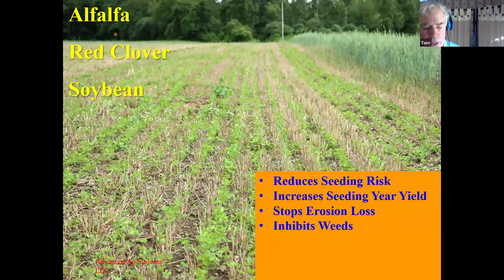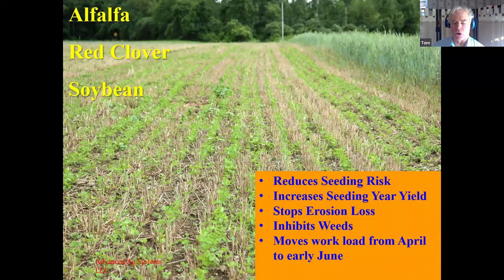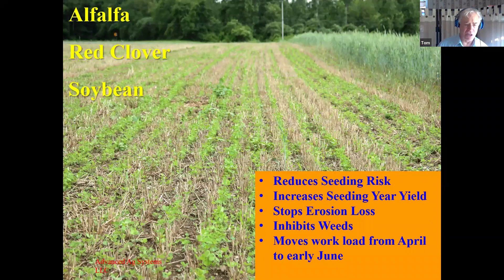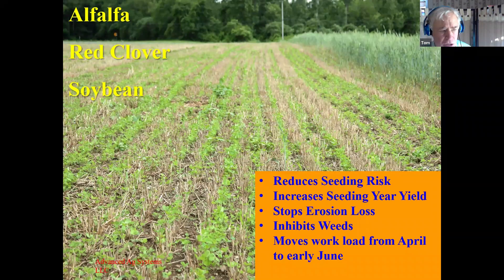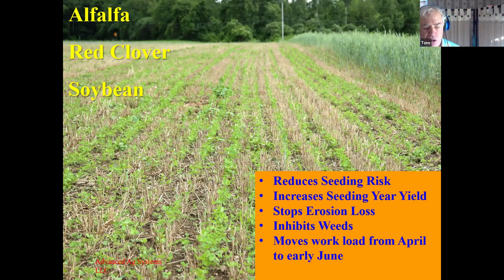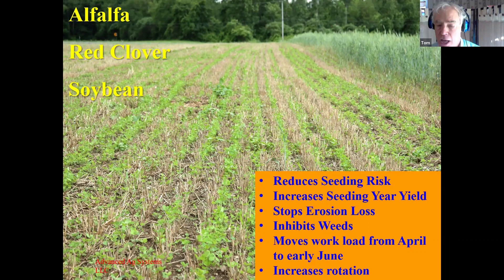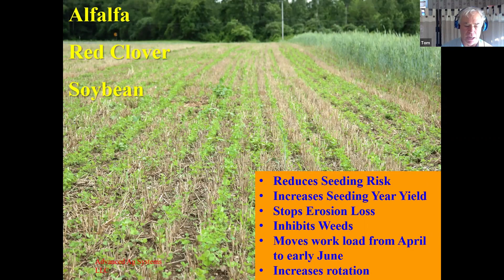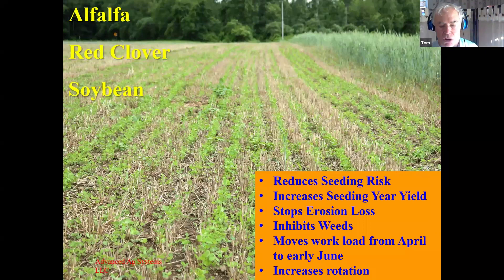The allelopathy will inhibit weeds, but more importantly it balances the workload out on the farm. As consultants, we come in and tell farmers they've got to do this, this, this — and their answer is, we can do that if you get out here and get on the tractor because there aren't enough hours in the day. But this moves that workload from April to early June. And if you can do it and it works as well as this alfalfa in the picture, farmers have found that because it is so easy and has a high degree of success, they are no longer afraid of rotating. A lot of times they don't rotate because putting in the seeding is such a risk. Now it is no longer a risk.